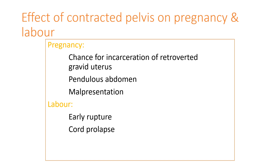The next effect is pendulous abdomen. In cases of disproportion, the baby cannot enter into the pelvis, so when it comes downward it pushes the abdomen outward, leading to a chance for pendulous abdomen. The next one is malpresentation — if the head comes downward and there is no space to accommodate it, the baby may change its position, leading to a chance for malpresentation.